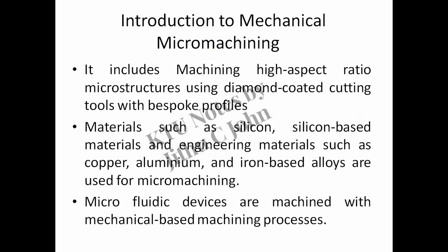Introduction to Mechanical Micromachining. It includes machining high aspect ratio microstructures using diamond coated cutting tools with bespoke profiles. Materials such as silicon, silicon based materials, and engineering materials such as copper, aluminium, and iron based alloys are used for micromachining. Microfluidic devices are machined with mechanical based machining processes.